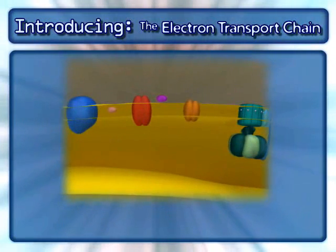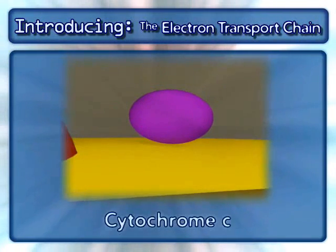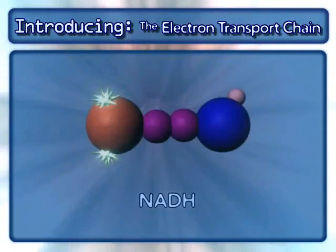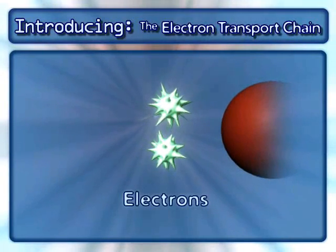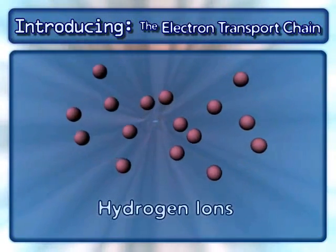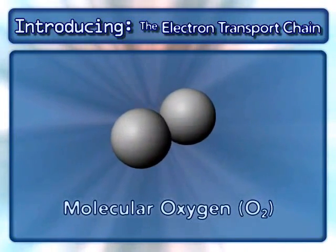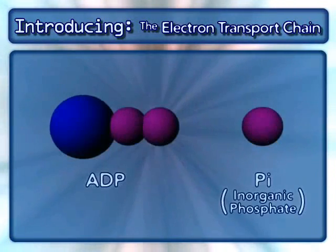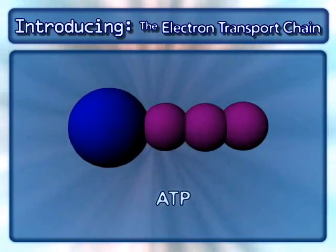In addition to these complexes, two mobile carriers are also involved: ubiquinone and cytochrome C. Other key components in this process are NADH and the electrons from it, hydrogen ions, molecular oxygen, water, and ADP and inorganic phosphate, which combine to form ATP.